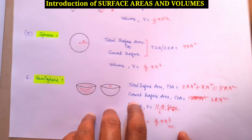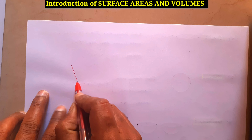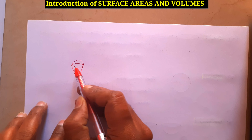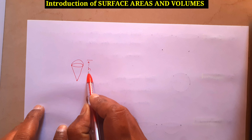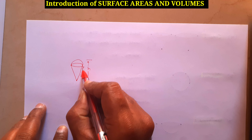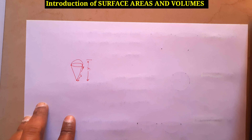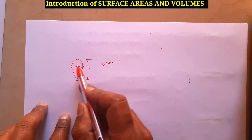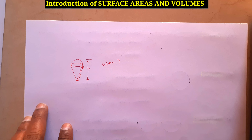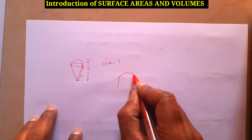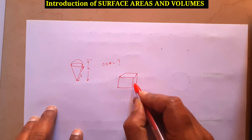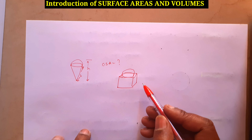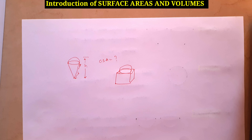Based on these formulas you will get questions on combined shapes. For example, there may be a cone with a hemisphere placed on top — you may need to find total height, slant height of the cone, or the combined curved surface area (CSA of cone + CSA of hemisphere). Or they may give a cube with a hemisphere placed on top, and ask you to find total area or volume.